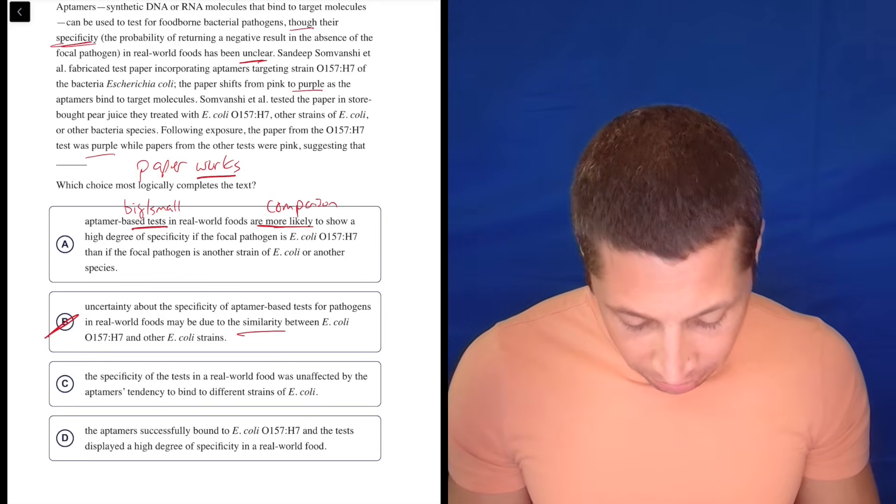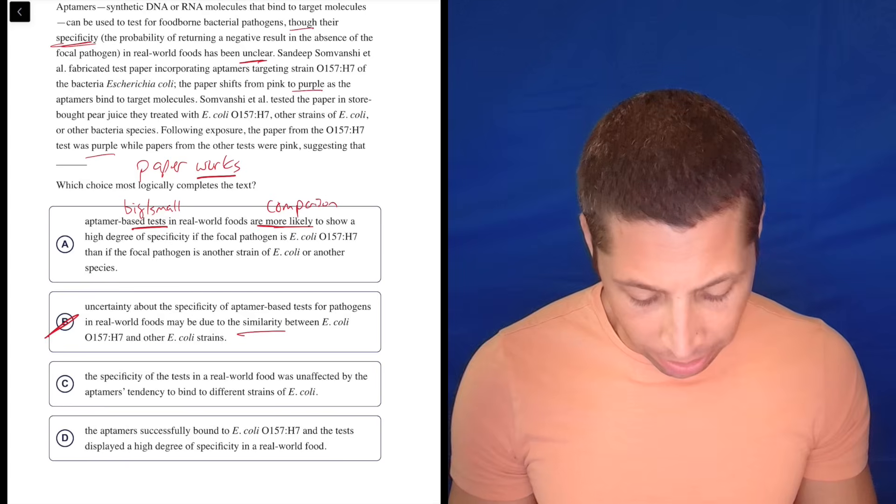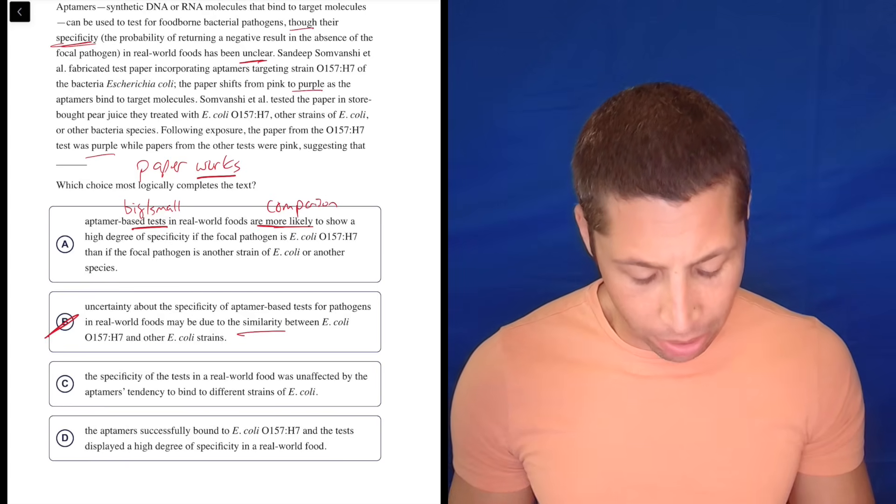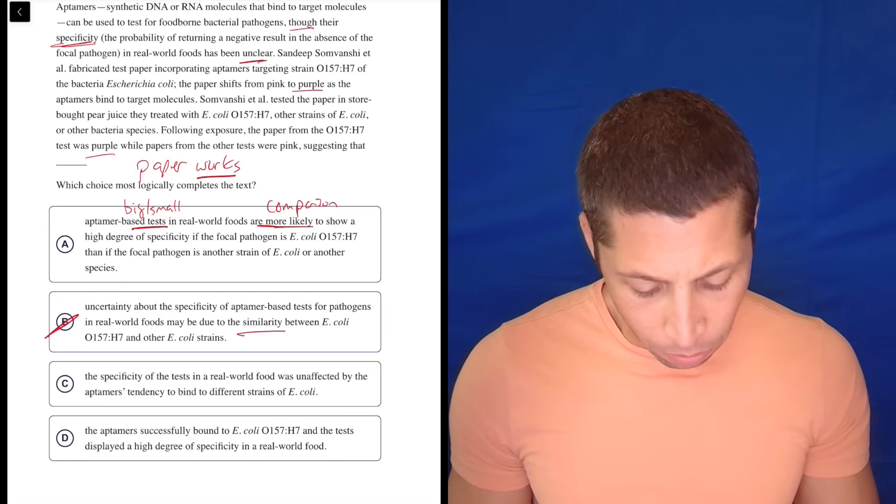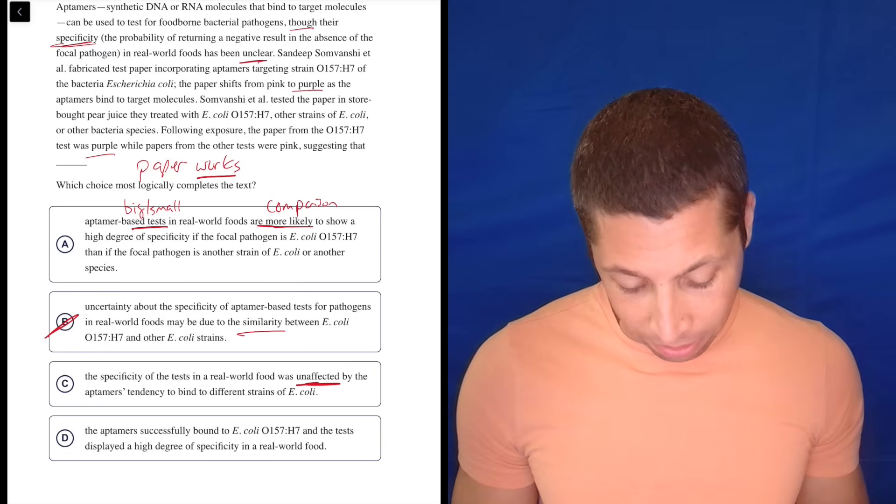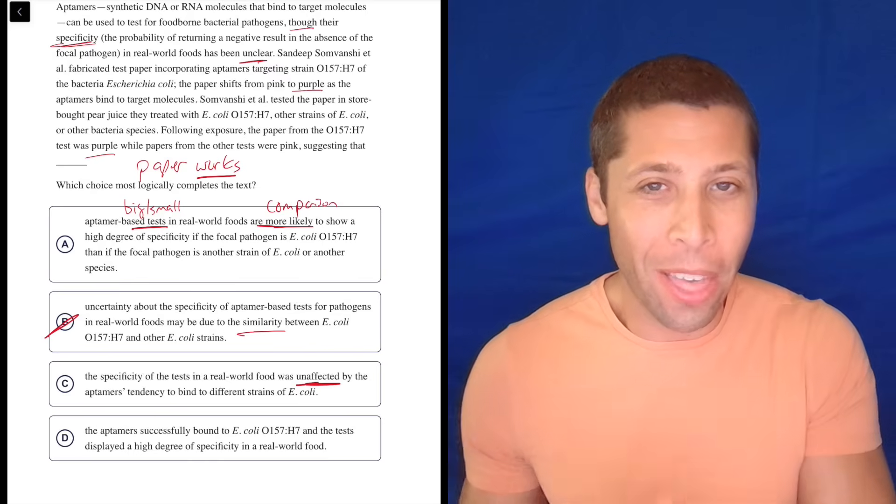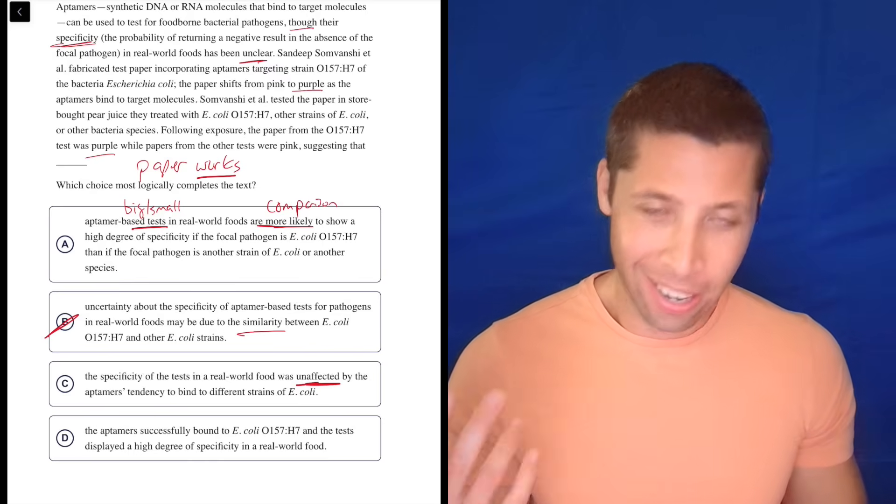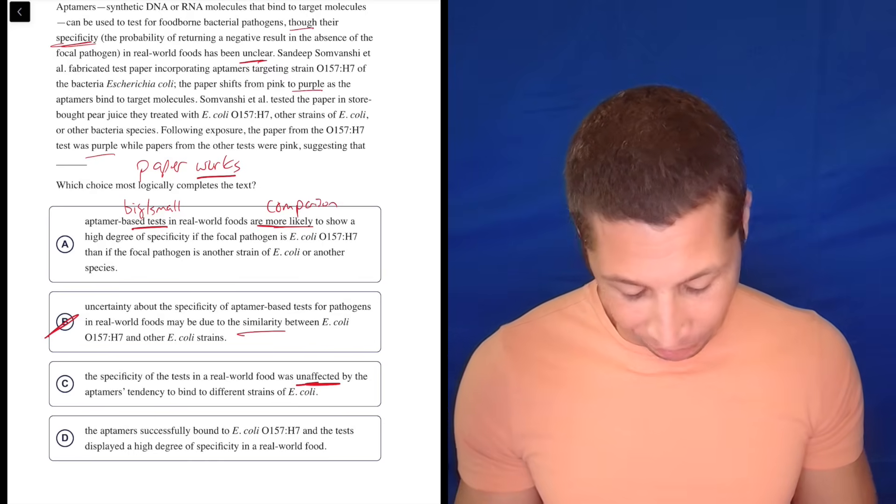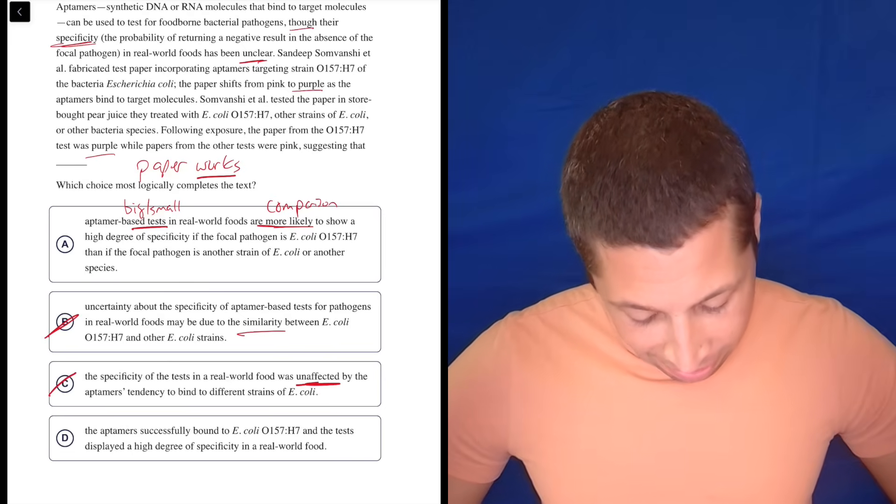So are they similar? I don't think so. There's obviously a difference if it's testing different things and it's getting different colors. So isn't this the opposite of what we're saying? I don't know. Maybe I don't understand it. Okay. The specificity of the tests in a real-world food was unaffected by the aptamer's tendency to bind to different strains of E. coli. What? It was affected, wasn't it, by the aptamer's? Because, again, it binds to one thing and not to the others. And maybe I'm missing something here. I feel like this is just obviously wrong, but okay.